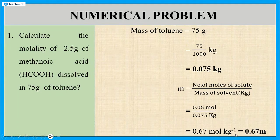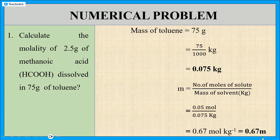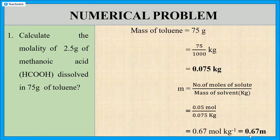Mole per kg is also written as small m. Do not write capital letter M — capital M is the unit of molarity. Here it is molality, so we write small letter m. The final answer is 0.67 m.